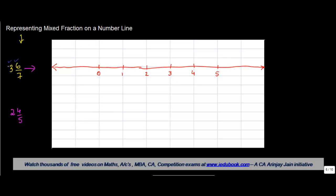You will first find out, in case of a mixed fraction, what is the whole number. Find the whole number and locate it on the number line. The whole number we have in this case is 3, and 3 is at this place.